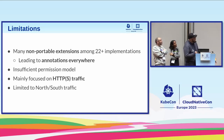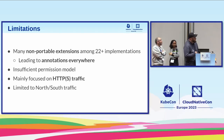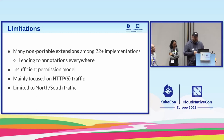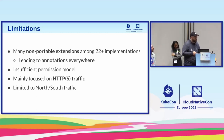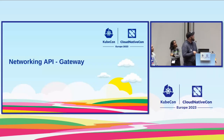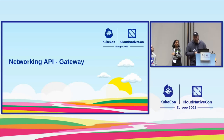Ingress also had an insufficient permission model, and it mainly focused on HTTP traffic. It was also limited to north-south traffic, which led us into the Gateway API.